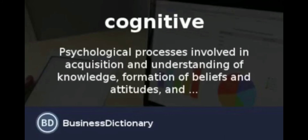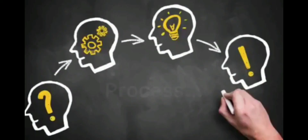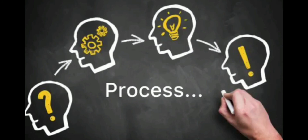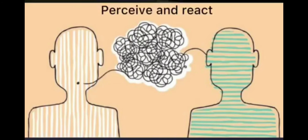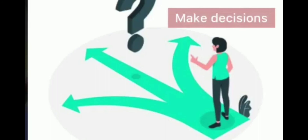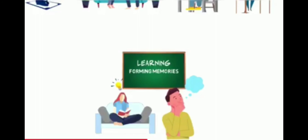What does cognitive mean? Cognitive refers to the psychological process involved in the acquisition and understanding of knowledge, and the formation of beliefs and attitudes. Cognition is defined as the mental action or process of acquiring knowledge and understanding through experience and senses. It is essentially the ability to perceive and react, process, understand, store and retrieve information, make decisions, and produce appropriate responses. Cognitive skills include critical thinking, perception, imagination, and planning — these are the basic mental abilities we use to think, study, and learn.